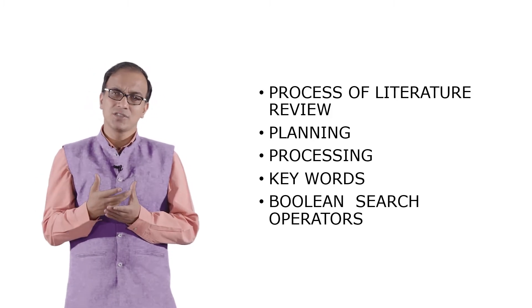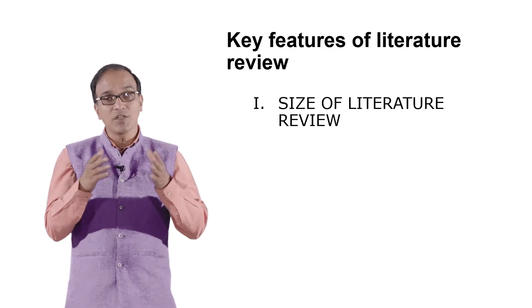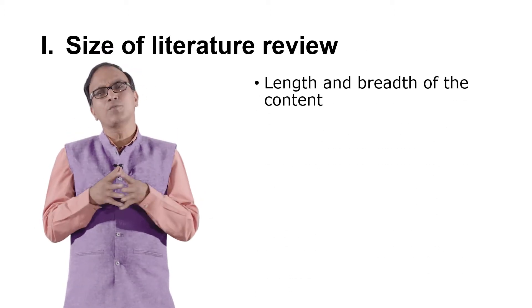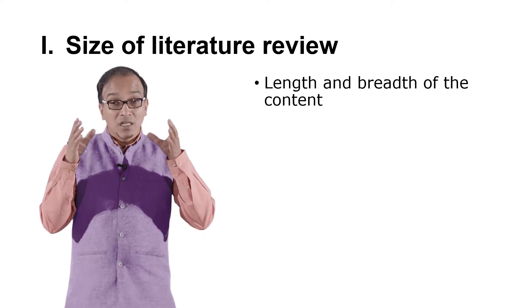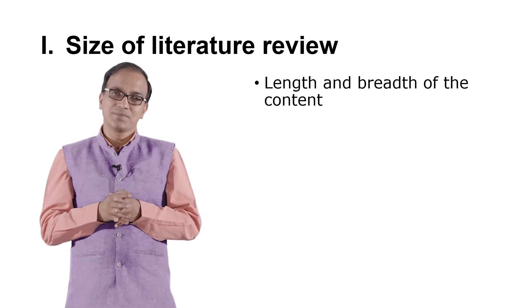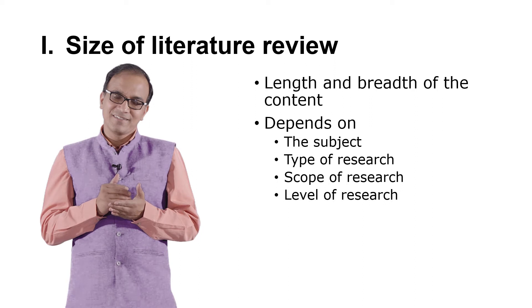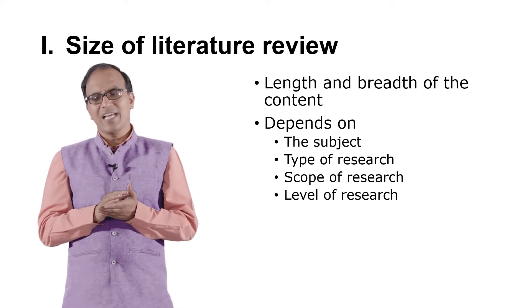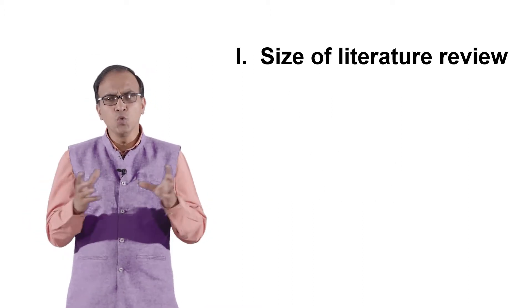But what are the key features of literature review? The first feature is the size of the literature review — size in the sense of the length and breadth of the topic to be covered, and the content to be compiled and collected. It depends on the subject, type of research, scope of the research, and level of the research.